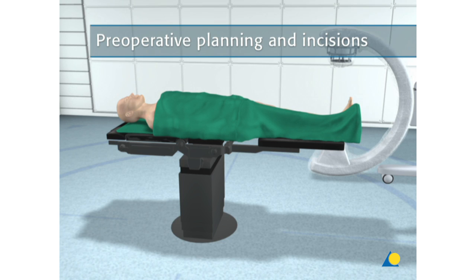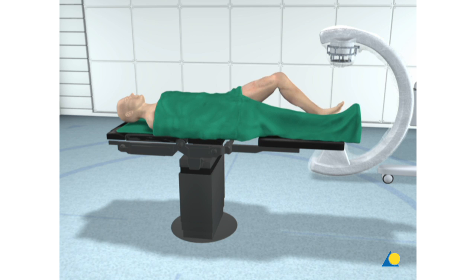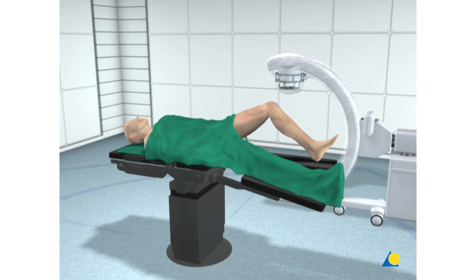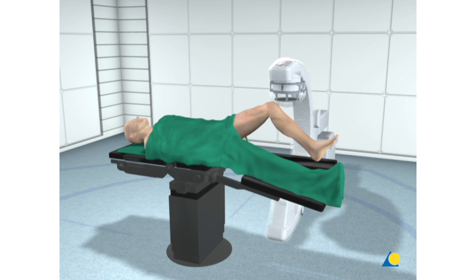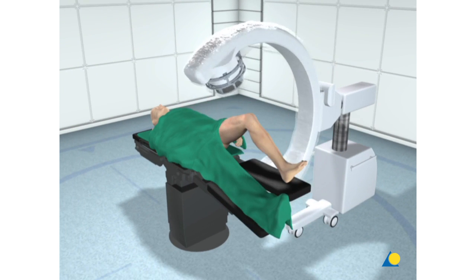Preoperative Planning and Incisions. The patient is positioned supine on the operating table with the injured knee flexed approximately 60 degrees. The uninjured leg is lowered so that C-arm images can be taken in both AP and lateral planes.